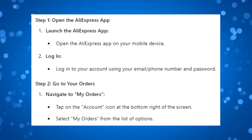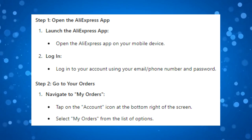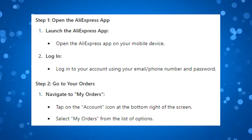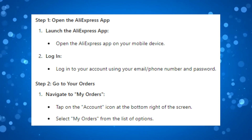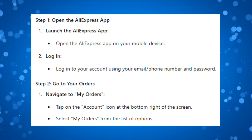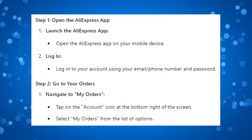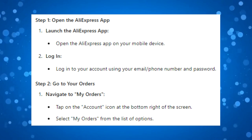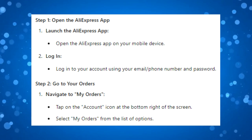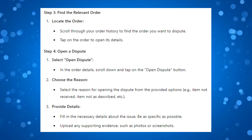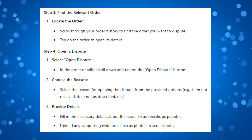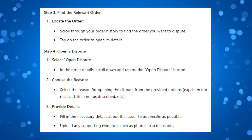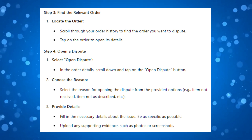So in order to do this, the first thing you're going to want to do is open up the AliExpress App on your device and log into your account using your email or phone number and password. Next, tap onto the account icon at the bottom right-hand corner of the screen and then select 'My Orders' from the list of options. From here, scroll through your order history to find the order that you want to dispute, then tap on the order itself to open up the order details.